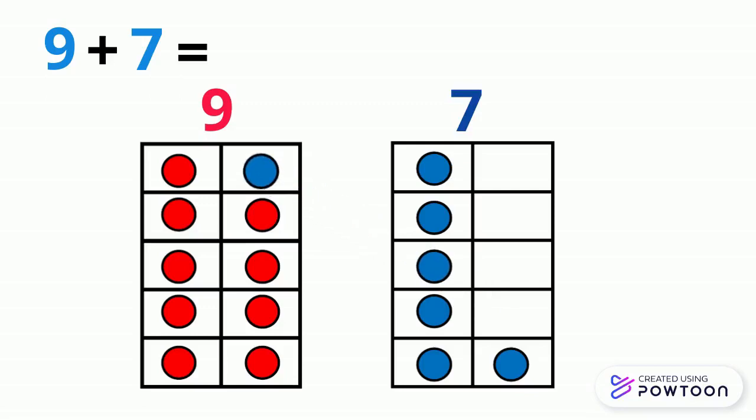7 gave 9 1, 7 became 6 and 9 became 10. So, 9 plus 7 equals 10 plus 6 equals 16.